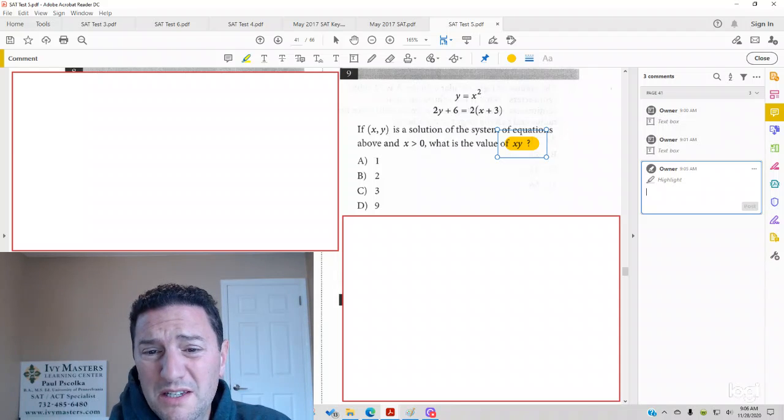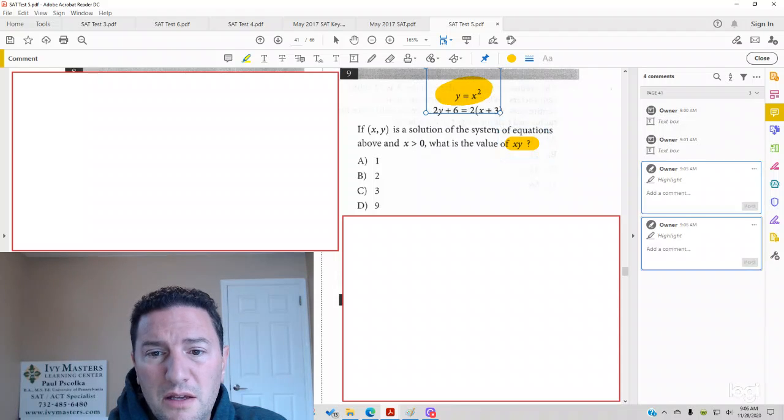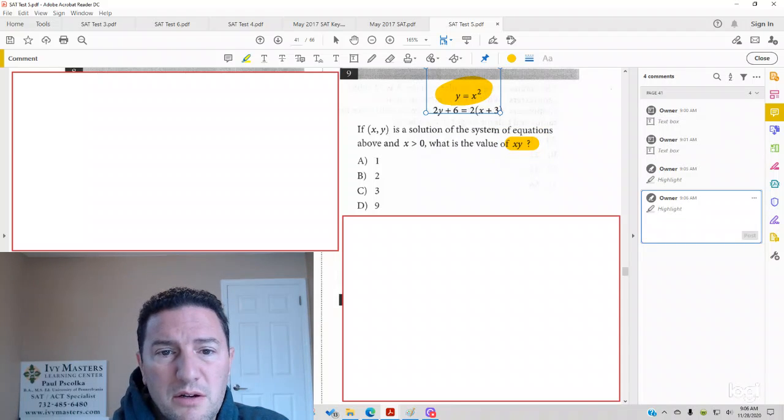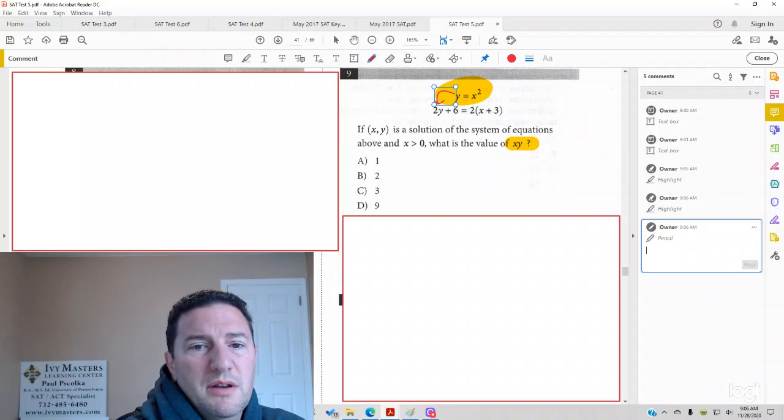So, what's the easiest way to do this system? Any time you have two equations, typically you are doing a system. Well, y equals x squared. So, in place of y, you're going to put x squared in the second equation.